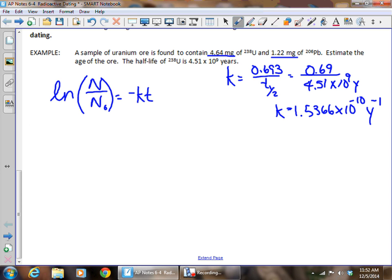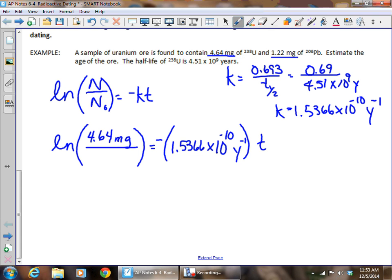Now we have to be careful because the reason it gives us the mass of uranium and of lead is because when uranium decays, it turns into lead. We know the amount then of uranium-238 that we have now. It tells us 4.64 milligrams. The problem is we can't just add those two masses together, the 4.64 and the 1.22, because it wasn't lead-206 back in the day. It's lost some of its mass due to the decay of the uranium. So we don't know N0 at this point. We've got to do a little side calculation for that.